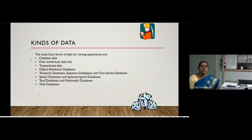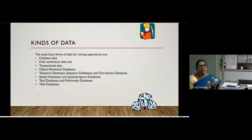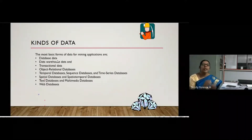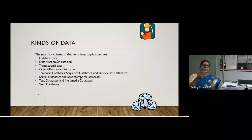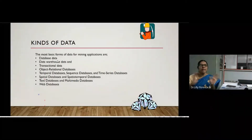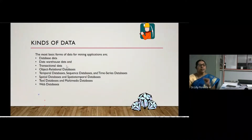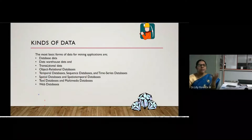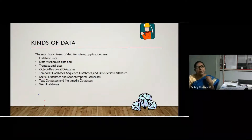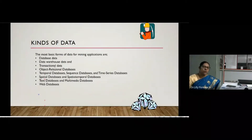The first basic form is a relational database — Oracle, MySQL, SQL, or any database. Databases have row-column structure where each column is treated as an attribute used for mining. The next is data warehouse data. A data warehouse uses a multi-dimensional cube structure, and we can apply OLAP — Online Analytical Processing — on the data warehouse model.